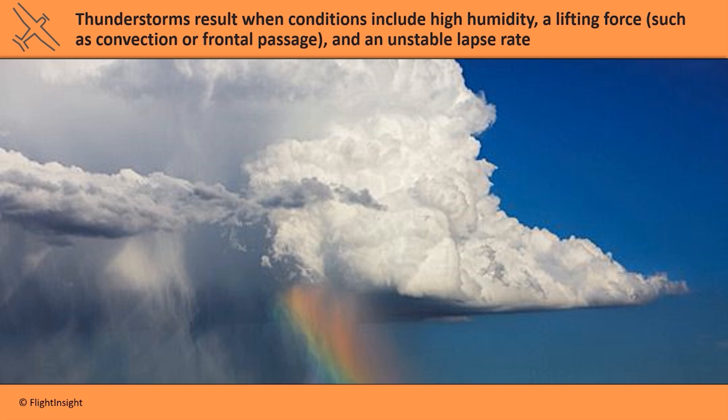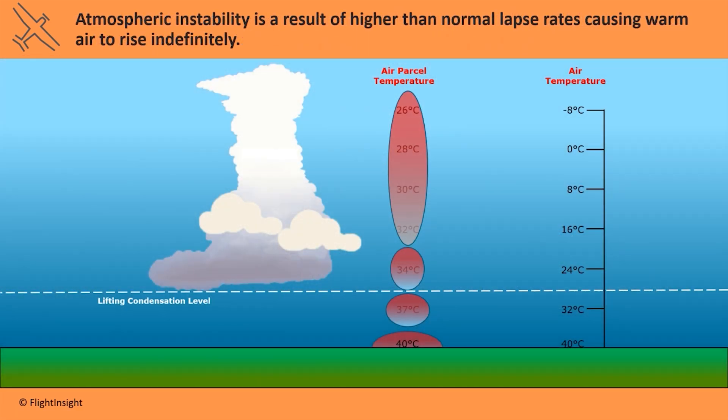Lastly, the air must be unstable. This means that as warm air rises, the temperature of the air around it drops so rapidly that it will continue to rise indefinitely. When the air is said to be unstable, its lapse rate is higher than normal. The temperature drop of the thermal is slower than the temperature drop of the larger atmosphere, so the air keeps rising and rising.